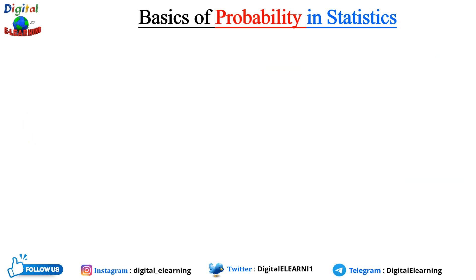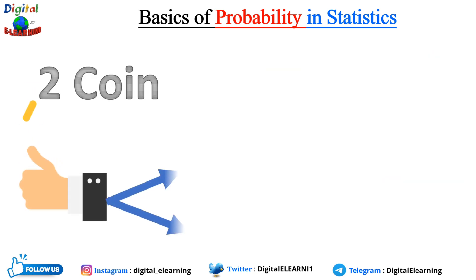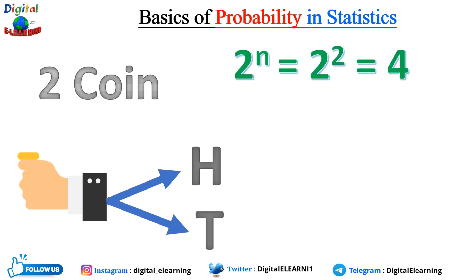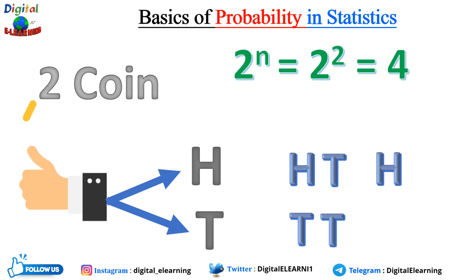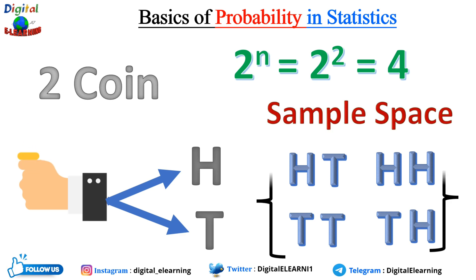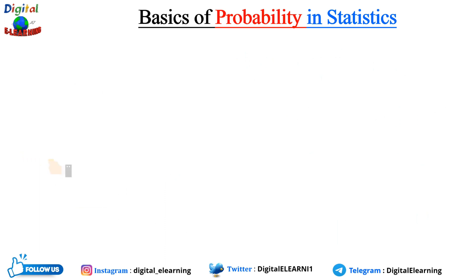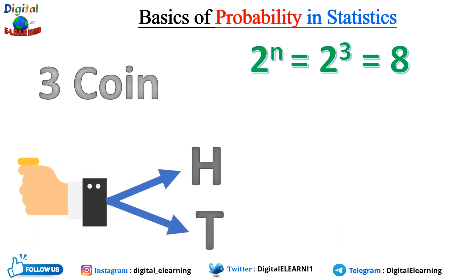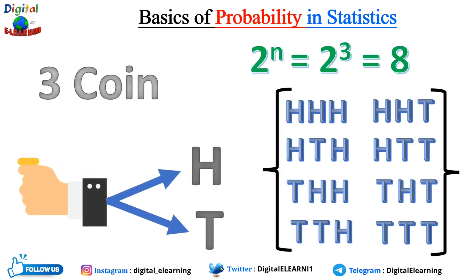When two coins are tossed, we get four possible outcomes: our sample space consists of HH, HT, TH, and TT. When three coins are tossed, the sample space consists of eight values.